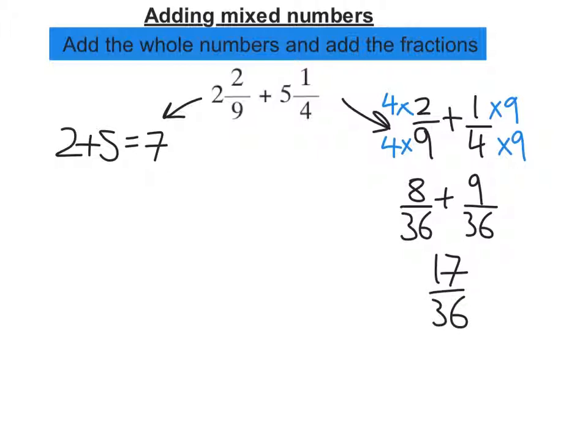Check to see if it cancels. No, it doesn't. So I've got my two bits here. So my answer, if I put my whole and my fraction together, is 7 and 17 over 36.